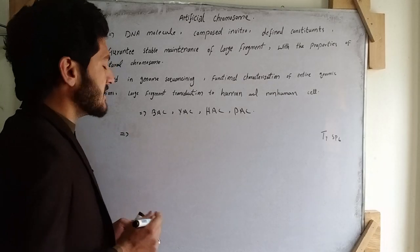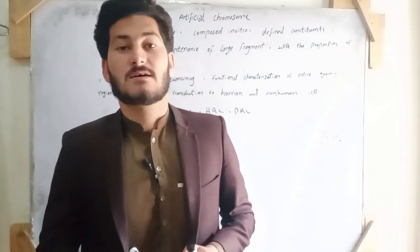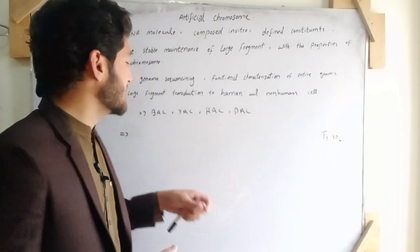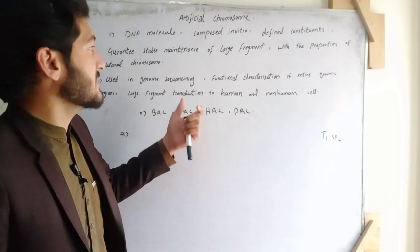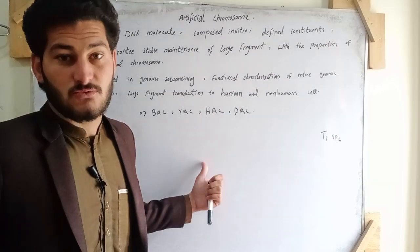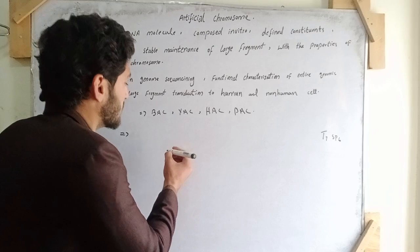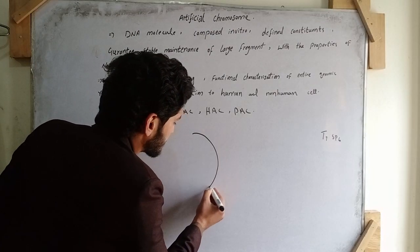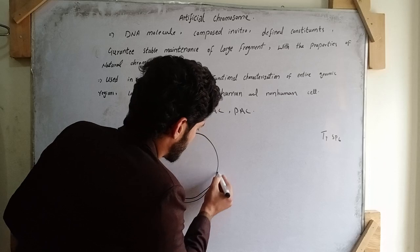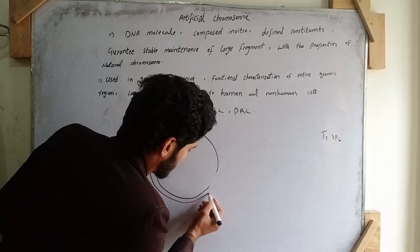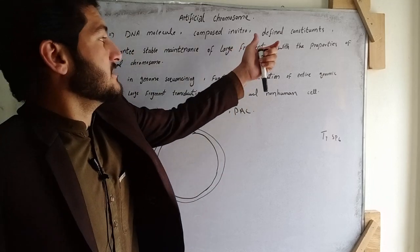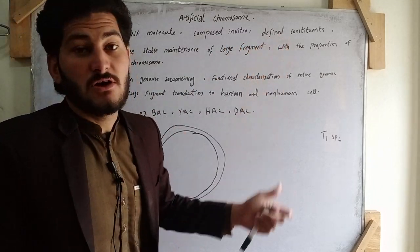Now let's explain the Bacterial Artificial Chromosome structurally. Bacteria have an F plasmid, and we can elaborate the structure of this plasmid. Basically, F plasmid — meaning fertility plasmid — forms the basis of the Bacterial Artificial Chromosome.